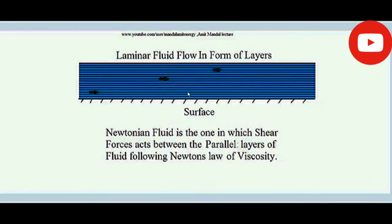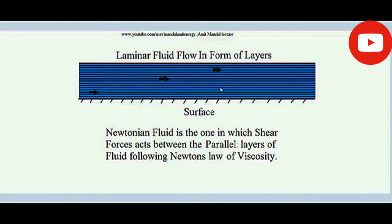When layers of fluid flow over each other, they are sliding over each other. For a Newtonian fluid — for example, water is a Newtonian fluid — when layers have relative velocity between them, a kind of frictional force acts between those layers. This is a sort of fluid friction due to the viscosity of the fluid. Viscosity is a property of fluid due to which layers flowing over each other exert a frictional force between them.